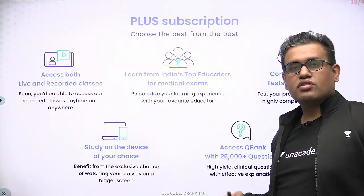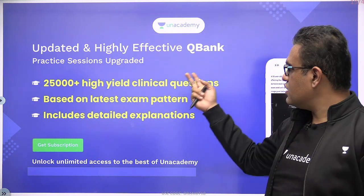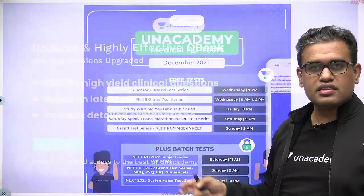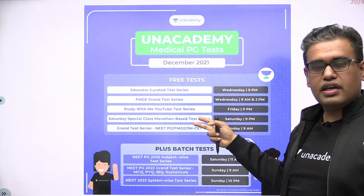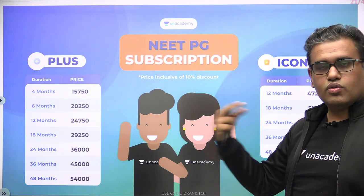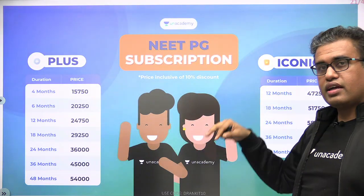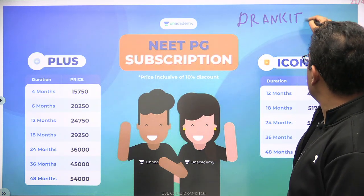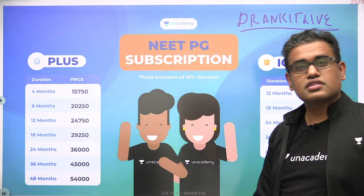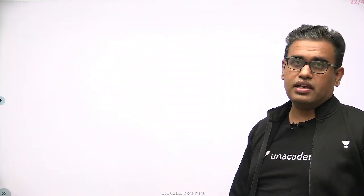Hello all, welcome again to the session. The topic of discussion will be Jejunum and Ileum — mainly to differentiate between the structures of Jejunum and Ileum. I am Dr. Ankit Khande, MS Anatomy. Let's start the session. A few benefits of the plus subscription: Q-bank with 25,000+ MCQs with explanations, weekly December tests in the academy. If you want extra discount, use the code 'Dr. Ankit Live' for an extra 10% discount.